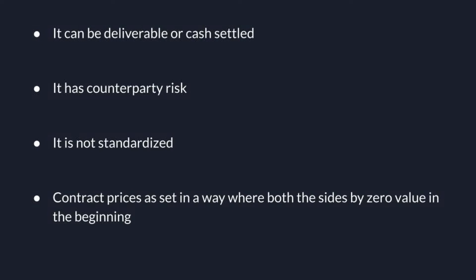A forward contract can be deliverable or cash-settled. Deliverable means I agreed to buy the wheat and you agreed to sell it — you will physically deliver the wheat to me three months from now. Otherwise, we can cash-settle: we decide what we are going to buy and sell, and all you do is pay me the difference. If the price of wheat increases and I'm the winner, you pay me the difference between the market price and the agreed contract price. If the price of wheat falls, I pay the difference to you.